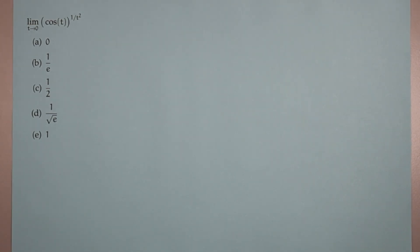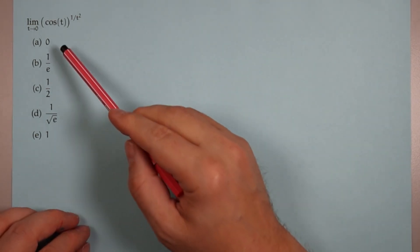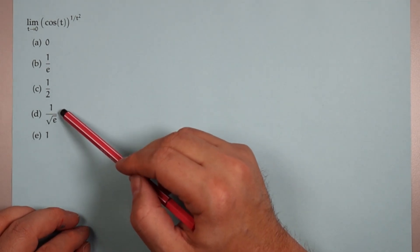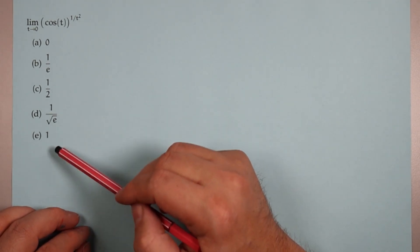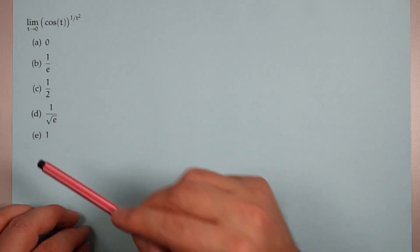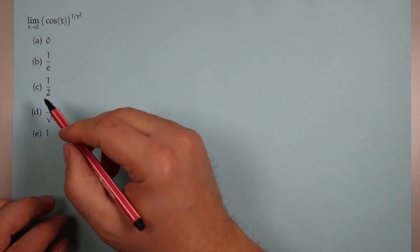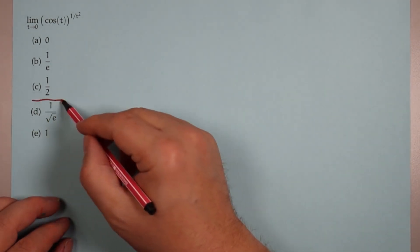Finally, find the limit as t goes to zero of cosine(t) to the power 1/t². Our options are 0, 1/e, 1/2, 1/root e, or 1. Pause if you want and think about it. The answer is 1 over root e.